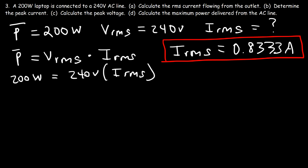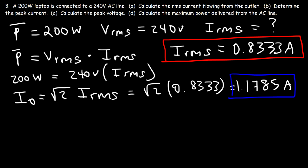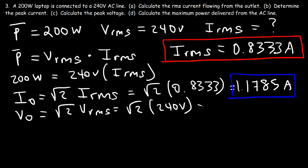Now calculate the peak current. The peak current equals the square root of 2 times the RMS current, so it's the square root of 2 times 0.8333, which equals 1.1785 amps. For part C, calculate the peak voltage. The peak voltage equals the square root of 2 times the RMS voltage, so that's the square root of 2 times 240 volts, which equals 339.4 volts.